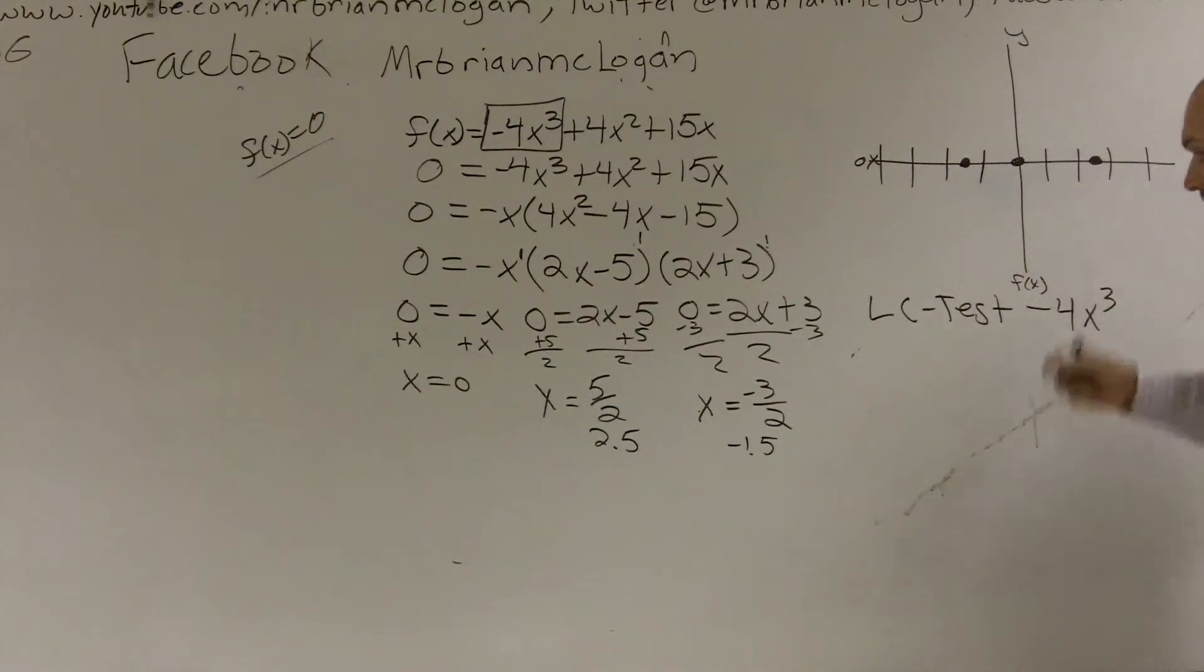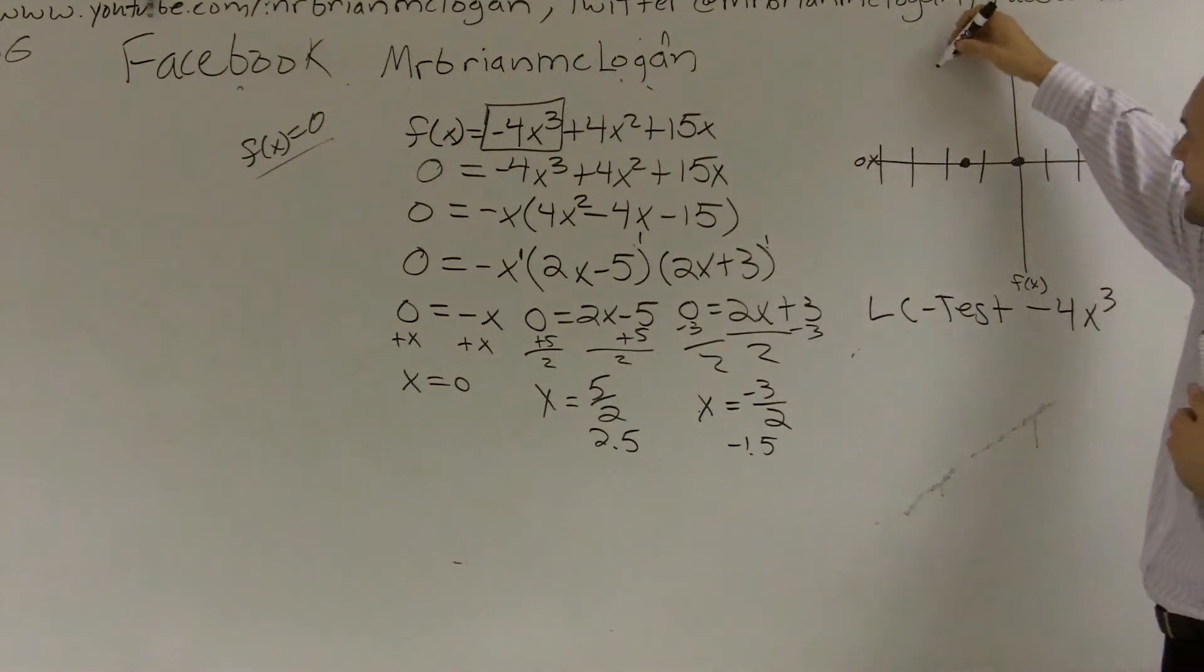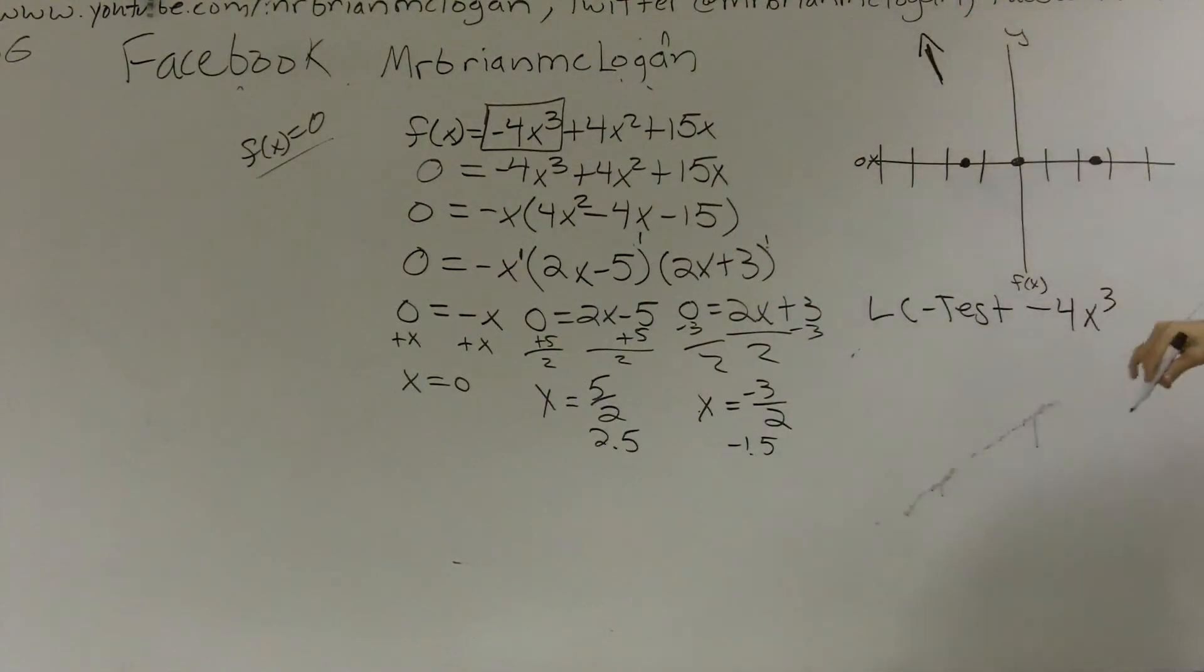If it's negative, we rise left, fall right. If it's positive, you fall left, rise right. So this is all, like I said, all the videos you guys can see for how to apply the leading coefficient test. So I know that this is a negative, so therefore my final end behavior, my graph is going to go down like that, and it's going to fall to the right. I don't know what's going to happen in between here, but I know it's going to fall to the right and rise to the left.